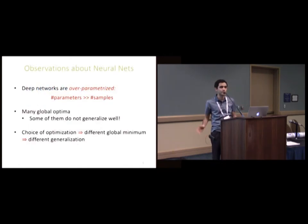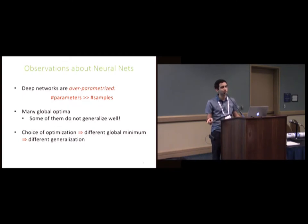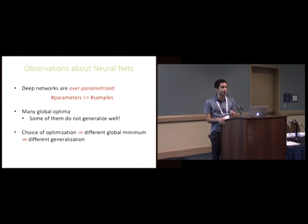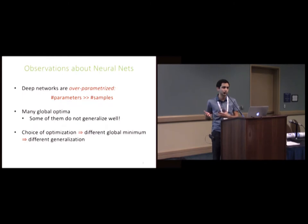We know neural networks are over-parameterized. In many settings we have more parameters than data points, which means we have too many global minima — too many points where we have zero training error. Some of them generalize well and some don't. But somehow SGD or the optimization algorithms we use find the ones that generalize. The only explanation is that these optimization algorithms are biasing toward solutions with low complexity, and this low complexity is what we don't understand.